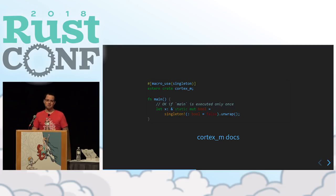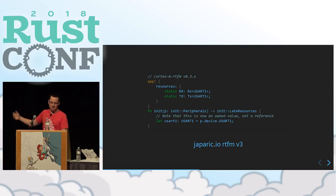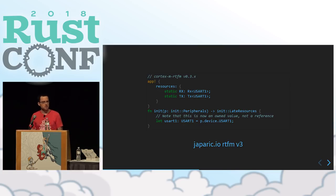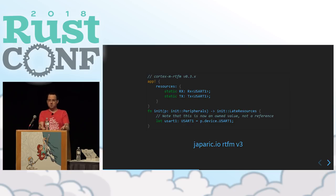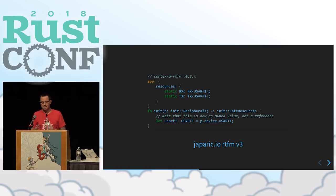You don't have to write this from scratch — this is Rust. In the cortex-m crate there's a singleton macro that does this for you. And if you use RTFM, which is kind of like a really lightweight operating system for these embedded devices, it handles it all in a macro — you don't even have to think about unwrapping or taking. On initialization it just says: here are all of the peripherals, now you have all of them, do with them what you want.